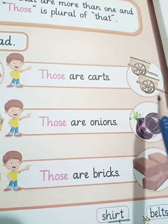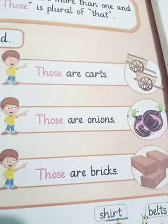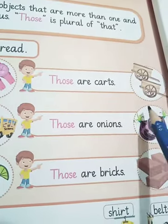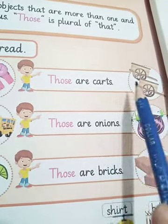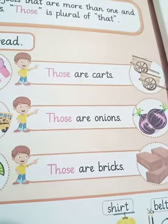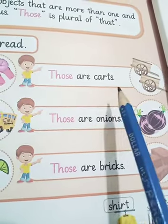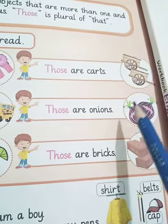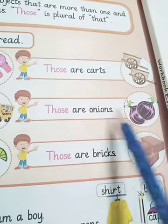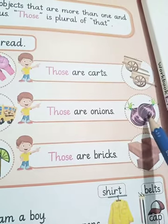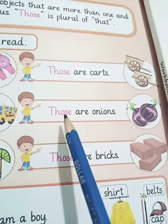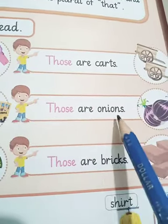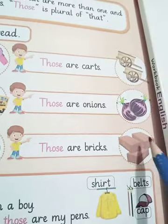See which picture is this — cards. How many cards are there? Two. Two cards means plural, so the boy is saying: 'Those are cards.' What are these? Onions — plural. And onions are far from the boy, so the boy is saying: 'Those are onions.'